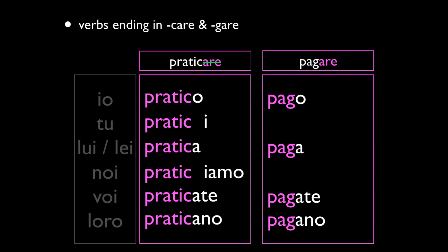In order to bring that hard C back, you have to add an H. The same thing happens in the NOI form: after conjugating through LUI/LEI — you have PRATICA, which is fine — but then you get to NOI and you add IAMO, giving you PRATICHIAMO, and that does not conserve the sound you're looking for. So in both cases you add an H, and then it's pronounced TU PRATICHI and NOI PRATICHIAMO, which conserves the hard C of PRATICARE.